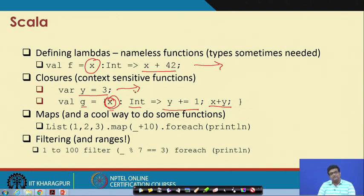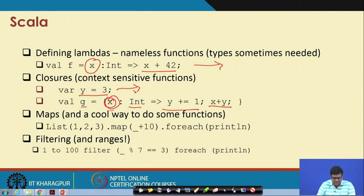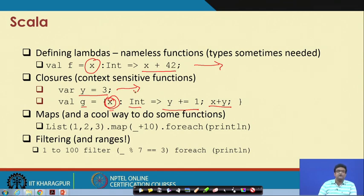Many functions do this — for example, methods of a class can dereference the local variables of that class while also taking in arguments. We will see how these are tackled and why they are important. Note that these functions can be context sensitive.